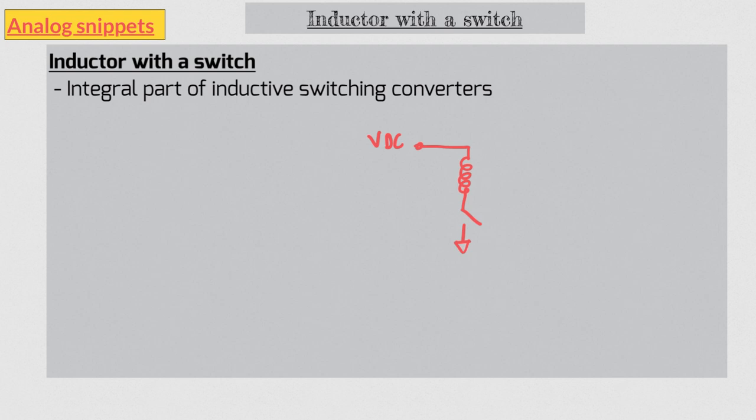Let's first look at an inductor followed by a switch which is connected to ground. Other end of the inductor is connected to a DC supply. The switch is a very low resistance switch and we will assume that it's a zero ohm switch.